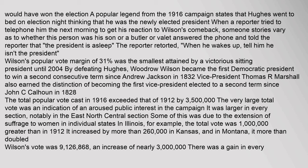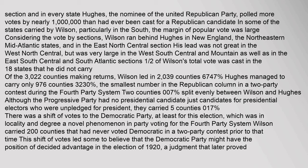Wilson's popular vote margin of 3.1 percent was the smallest attained by a victorious sitting president until 2004. By defeating Hughes, Woodrow Wilson became the first Democratic president to win a second consecutive term since Andrew Jackson in 1832. Vice President Thomas R. Marshall became the first Vice President elected to a second term since John C. Calhoun in 1828. The total popular vote cast in 1916 exceeded that of 1912 by 3,500,000 — a large increase indicating aroused public interest. Wilson's vote was 9,126,868, an increase of nearly 3,000,000. Hughes polled more votes than had ever been cast for a Republican candidate.